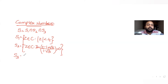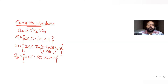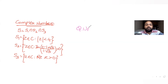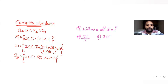S3 is the region which tells us z belongs to complex numbers and the real part of z is greater than zero. These are the three regions given to us. The first question asks us to find the area of the common region S. The four options given are 10π/3, 20π/3, 16π/3, and a fourth option.